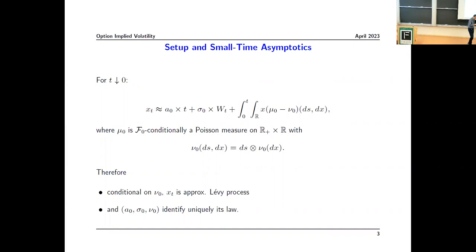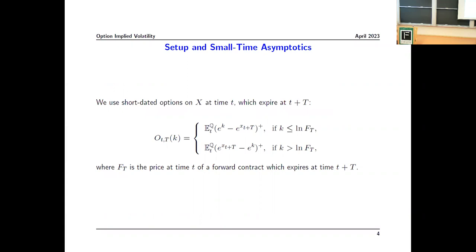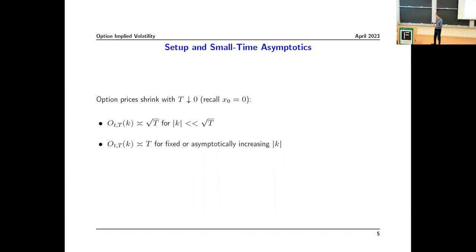The motivation is: if time to maturity is short, you can pretend the volatility stays constant, the drift term doesn't change, and the jump measure is constant — in other words, the model is approximately what we call Lévy. The three terms — a, sigma, and nu — uniquely identify its law, and I'm interested in sigma. I'll be using out-of-the-money options, and I put the notation for both puts and calls.